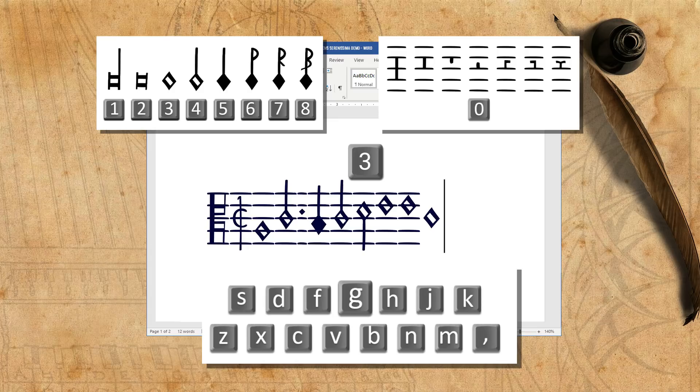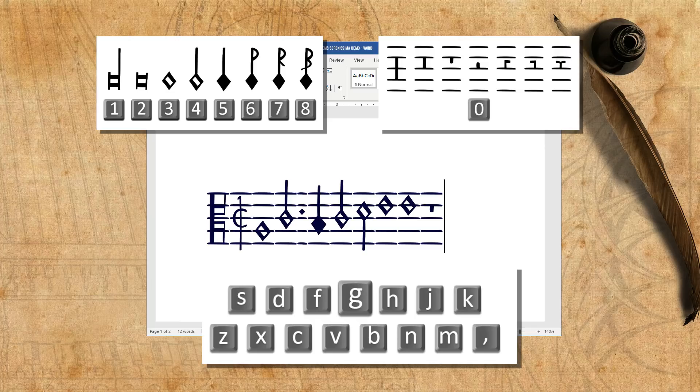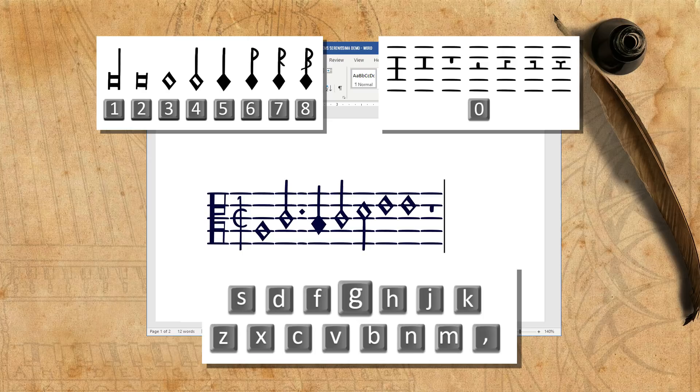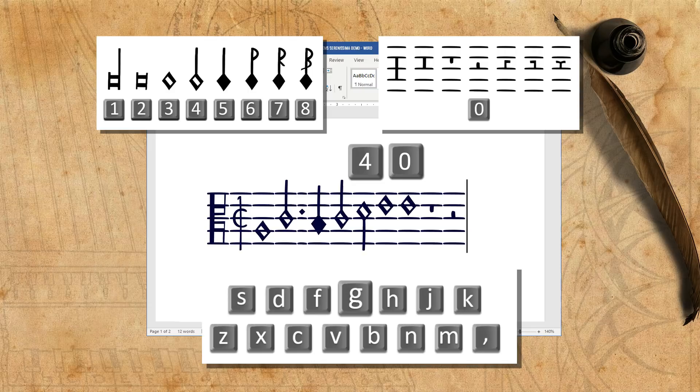If I want the rest to be placed elsewhere on the staff, it is possible, after typing 0, to type also a placement key. For example, if I want a minim rest above the fourth line, I'll press 4 for a minim, then 0 to turn it into a rest, and then n to place it where I want.